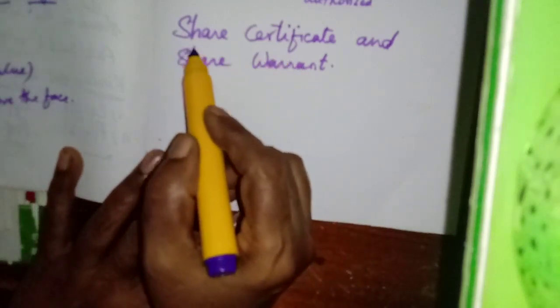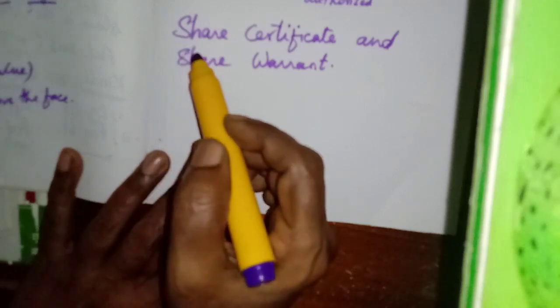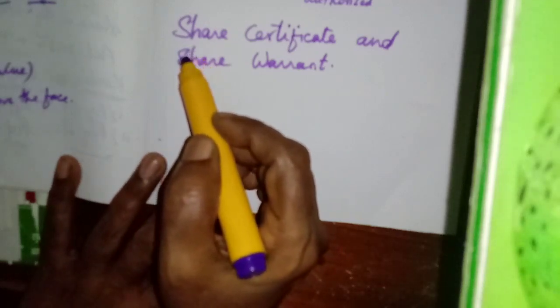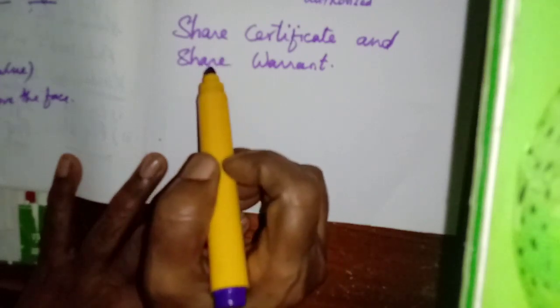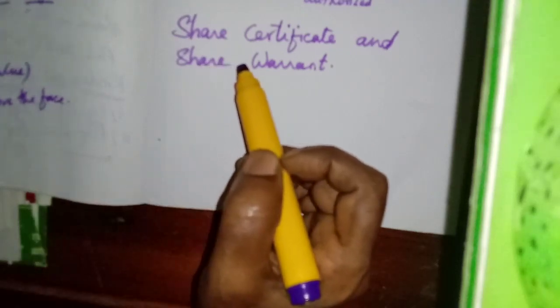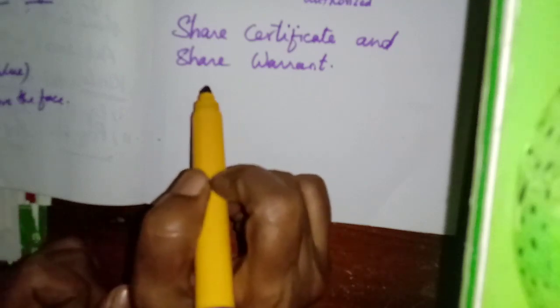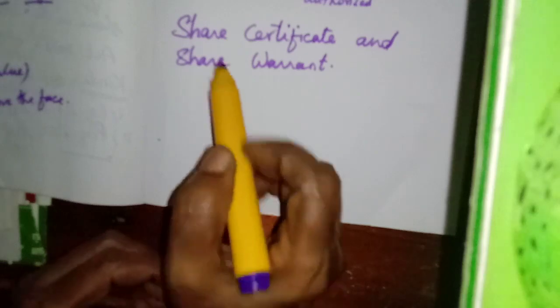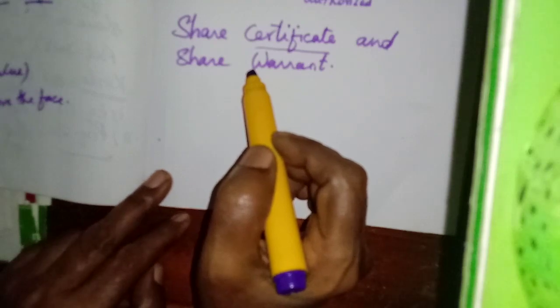We know a share will be subscribed by the public by paying the application money. After this, they will do the allotment. Whether it is a public company or a private company — any company which is limited by shares — must issue a share certificate to the shareholders.